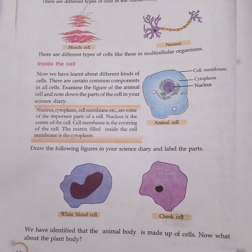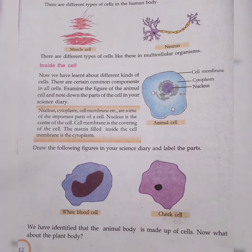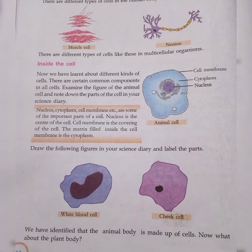There are different types of cells in the human body. Now we have learned about different kinds of cells. There are certain common components in all cells.